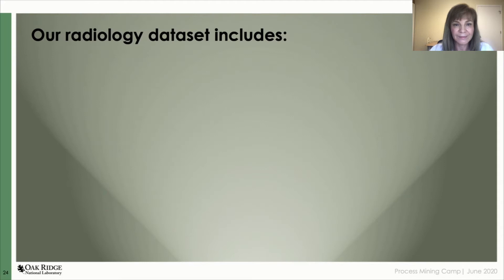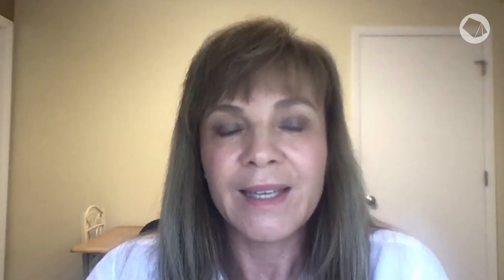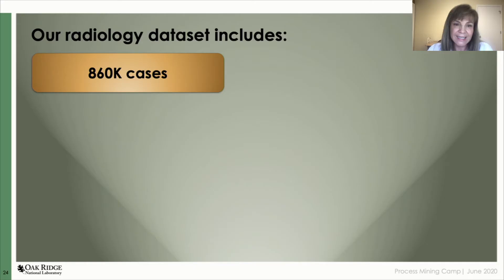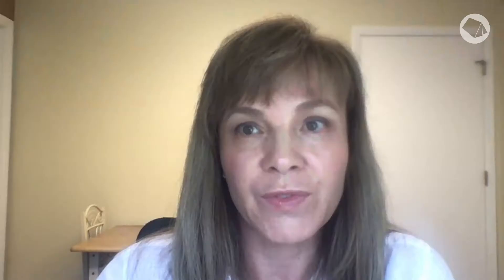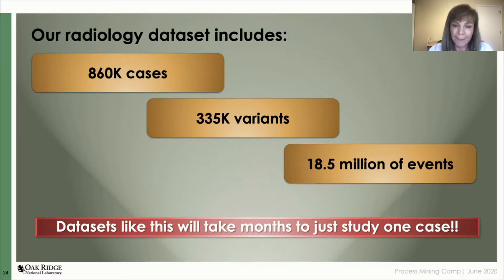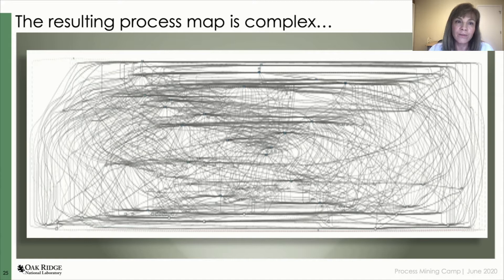In our radiology dataset we have 860,000 cases, 335,000 variants, and 18.5 million events — and this is just for six months of data. A dataset like this one would take months to study just one case. As we're working with a very large dataset with many variants and a very detailed level and many different types of activities, we looked for ways to simplify it and identify the failed cases.